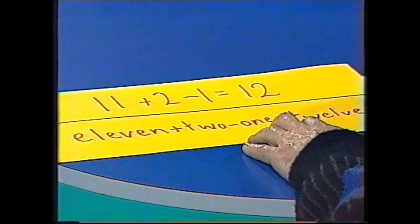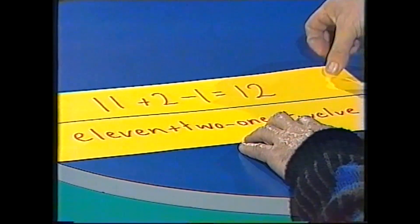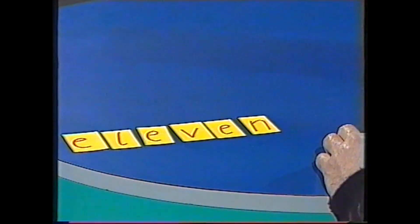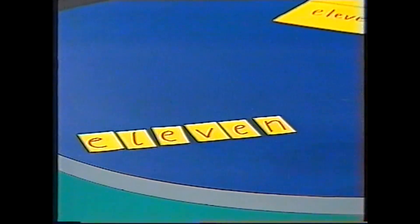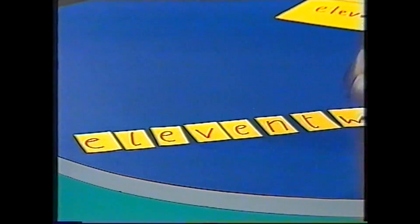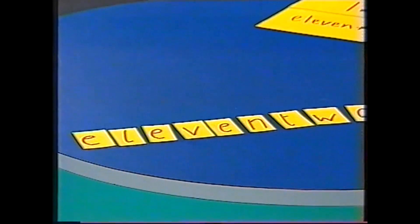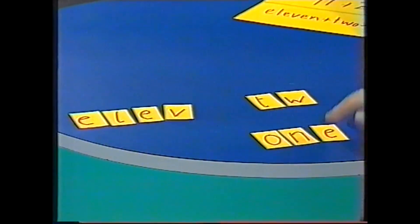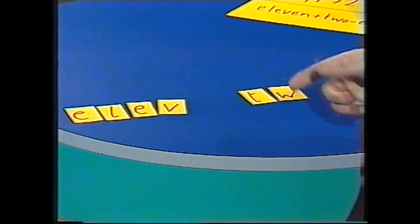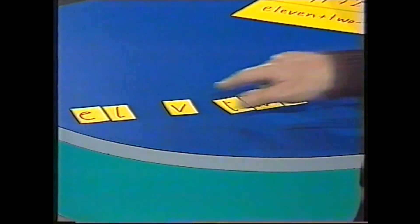And I can prove that to you like this. Let's take that away. See, there's 11. 11 plus 2 — well, let's add 2 to it. Minus 1. Well, there's O-N-E. That equals 1 — take that away. What are we left with? T-W-E-L-V-E. 12. Either way, 11 plus 2 minus 1 equals 12.